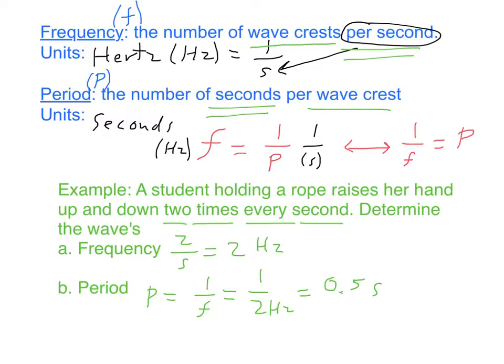The period of this is going to be period equals one over the frequency, which is one over two Hertz, which is 0.5 seconds. If we pause to think, she's making two waves every second, which must mean that each wave takes half of a second.